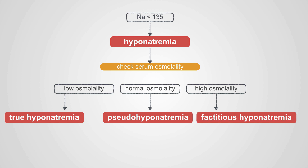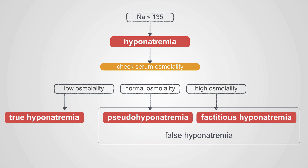In factitious hyponatremia, water is actually moving out of the cells rather than into them. This is due to elevated glucose, mannitol, or a glycine infusion during a urologic procedure. Both pseudo-hyponatremia and factitious hyponatremia make up false hyponatremia, indicating that these patients don't have water movement into the cells, nor do they show the typical symptoms of hyponatremia.